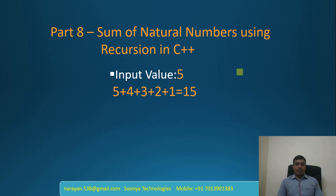The formula to calculate sum of natural numbers is n equals n into n plus 1 divided by 2. For example, if you want to calculate the sum of numbers up to 5, then we need to sum like 5 plus 4 plus 3 plus 2 plus 1.